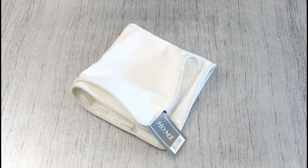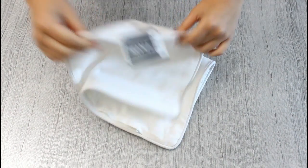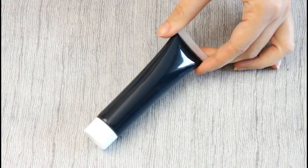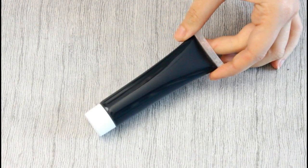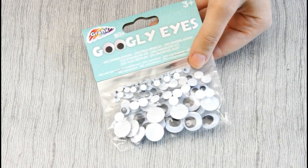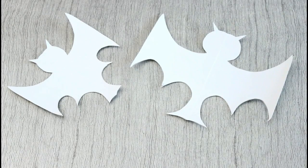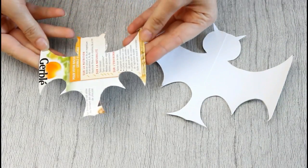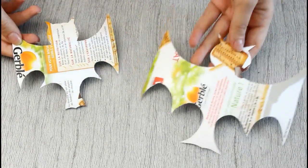For this DIY, I'm going to need a black pillowcase. I found mine at Action for less than 2 euros, a tube of black paint, and mobile eyes. I'm also going to need a bat template. I found the model on the internet which I drew on cardboard. I made 2 sizes of bats, I found it really nice.